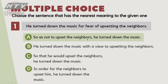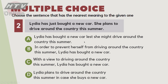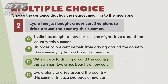Câu số 2: 'Lydia had just bought a new car. She plans to drive around the country this summer.' Mua xe để hè này đi du lịch vòng quanh đất nước. Đáp án là C: 'With a view to driving around the country this summer.'